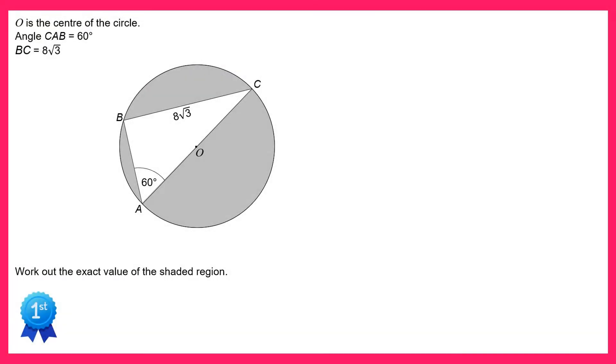Hello and welcome to the solution video for spicy question number two. The first thing to notice in this question is that O is the center of the circle. If line AC goes through O then it must be a diameter.